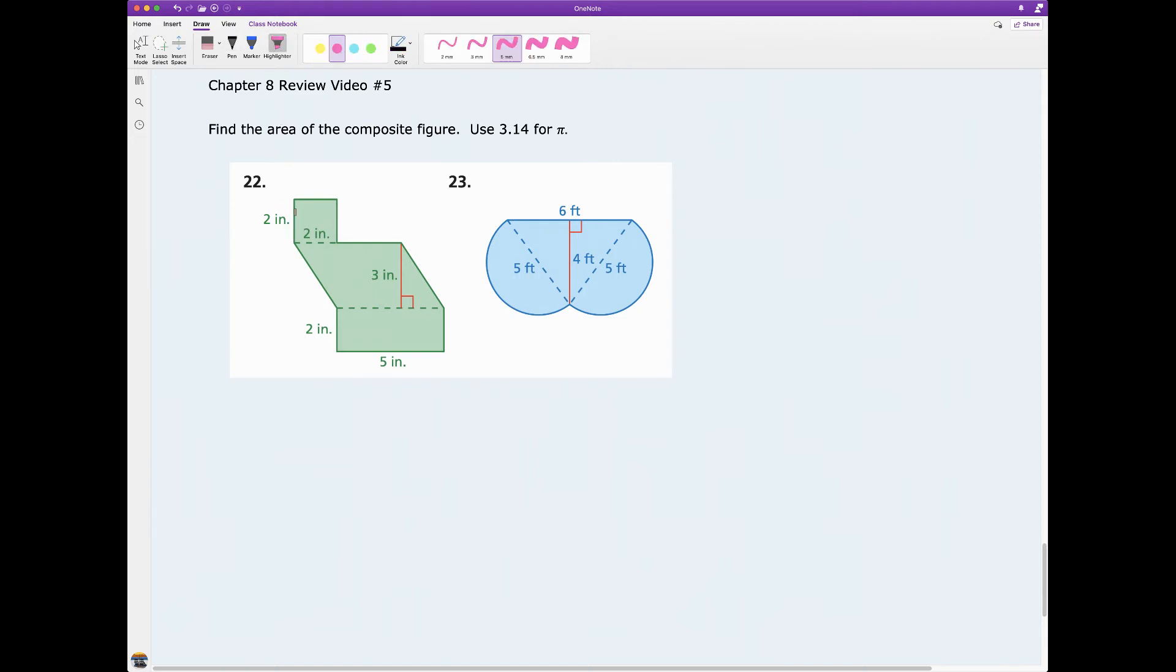The first thing to notice is that I have several different figures that make up this composite figure. I have this square here, so I got to find the area of that. I have this parallelogram and I need to find the area of the parallelogram. I also have a rectangle which I need to find the area of this rectangle.